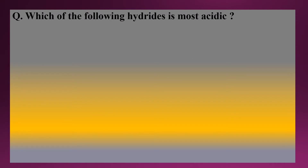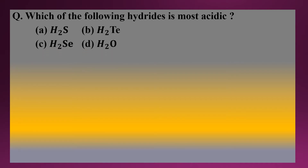The next question is: which of the following hydrides is most acidic? Options are H2S, H2Te, H2Se, and H2O. The correct answer is option B, H2Te. Acidic character increases as we move down in group 16 because the atomic size increases as we move from oxygen to tellurium. As atomic size increases, the bond distance between hydrogen and the group 16 element also increases, and the bond strength weakens.